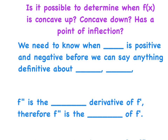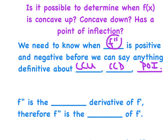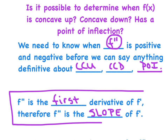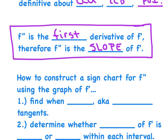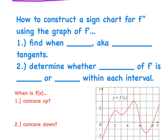We're going to go a little deeper tonight. Is it possible to determine when f of x is concave up, concave down, and whether it has a point of inflection by using the graph of f'? We need to know when f double prime is positive and negative before we can say anything definitive about concavity or points of inflection. f double prime is the first derivative of f prime, therefore f double prime is the slope of f prime. Repeat that to yourself — it's a relationship we need to feel very comfortable with.